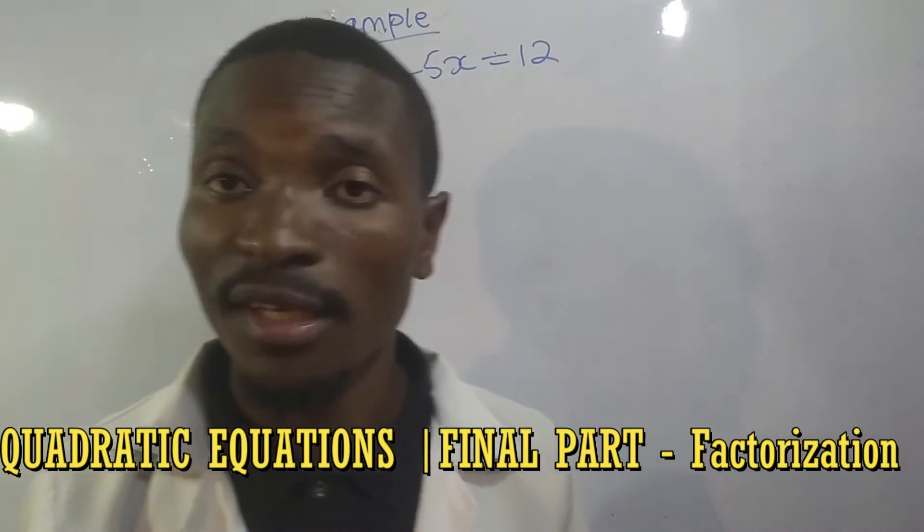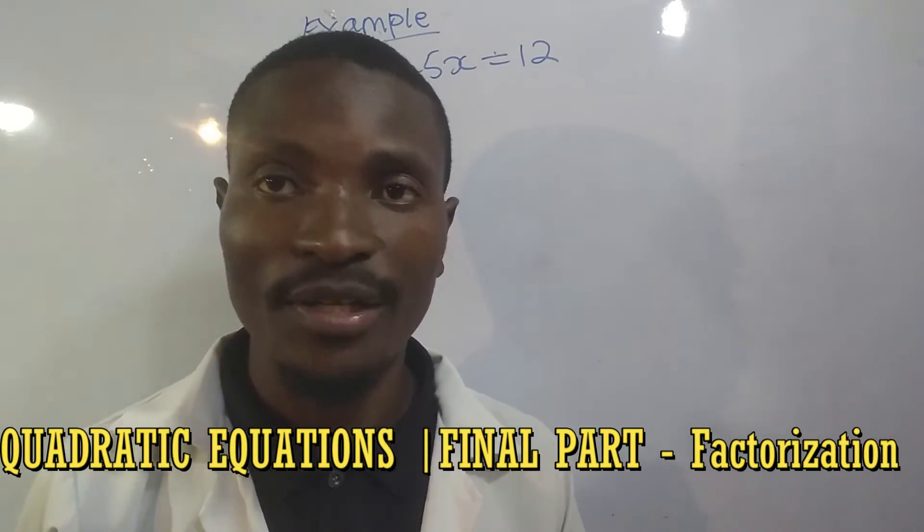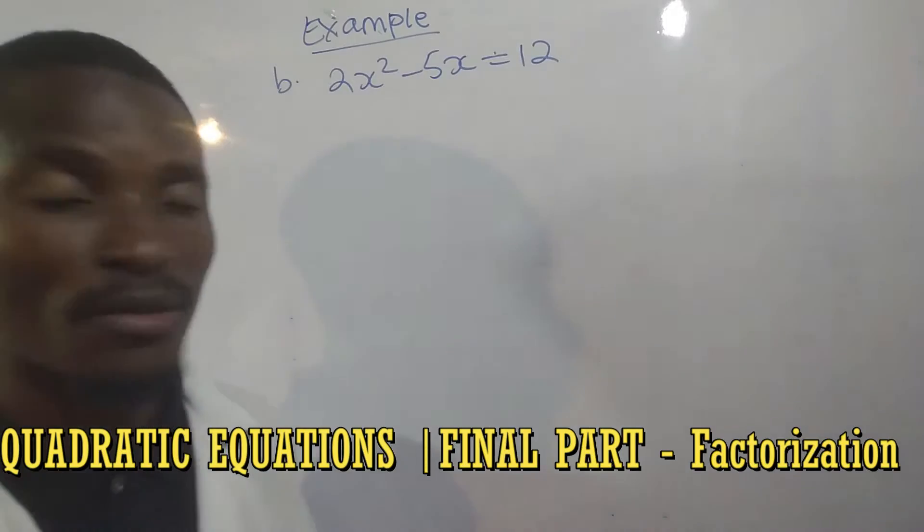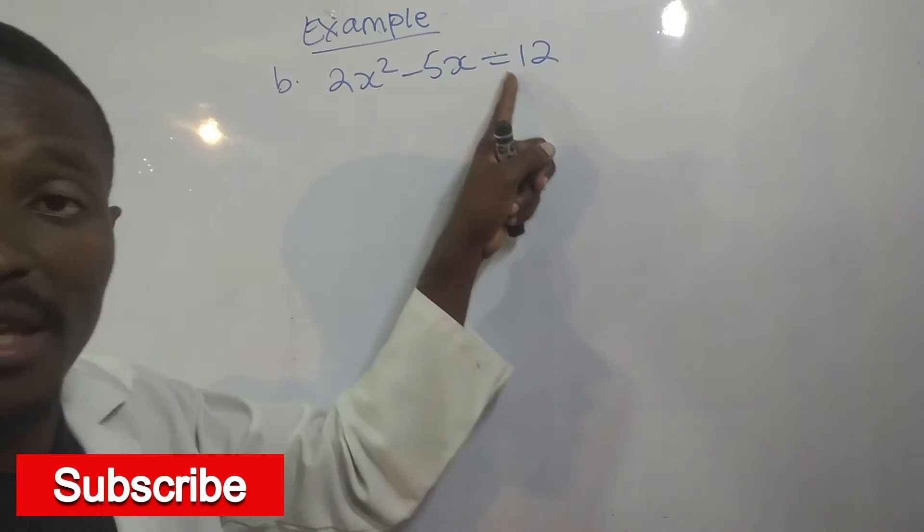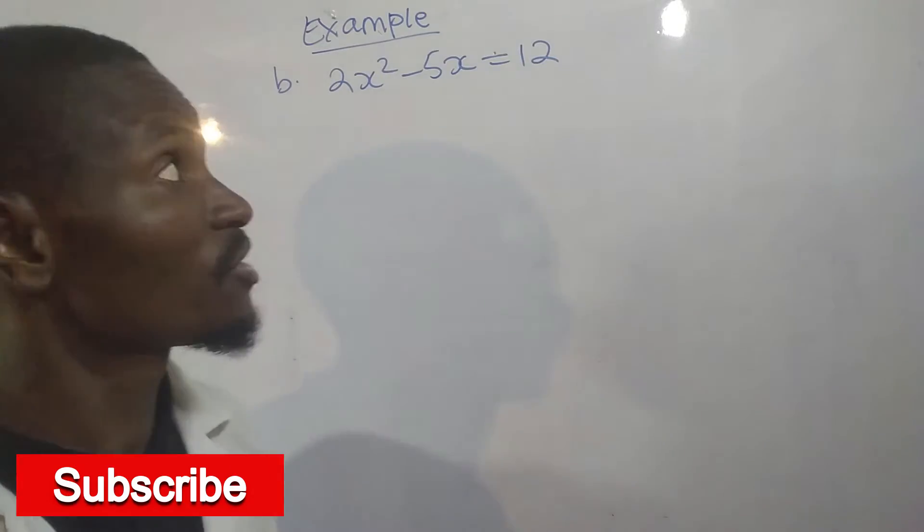Okay, so now we are solving the second example. Now, you can see that the second example is quite different from the previous examples because after the equals sign, a quadratic equation should always have zero.